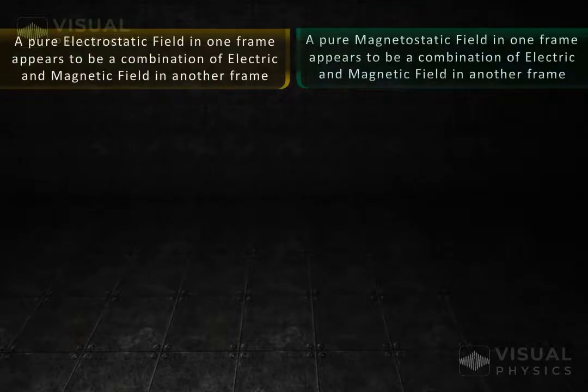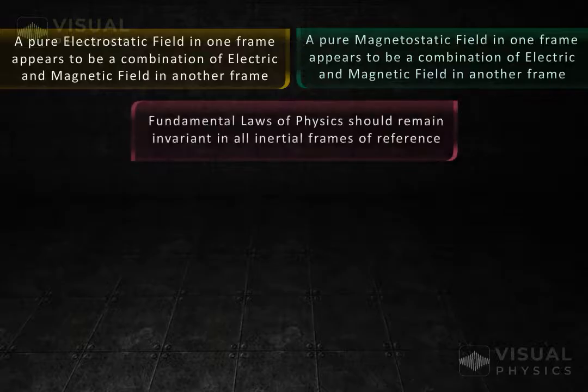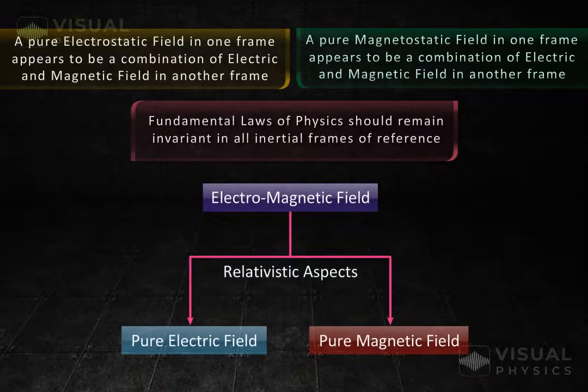Since looking at a situation from a different frame of reference cannot change the fundamental nature of fields, this tells us that electric and magnetic fields are just relativistic aspects of a single electromagnetic field.